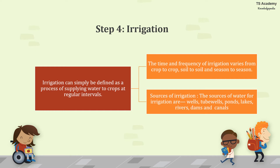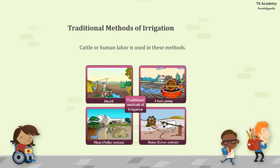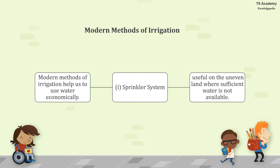Step 4 is irrigation, which can simply be defined as the process of supplying water to crops at regular intervals. The time and frequency of irrigation varies from crop to crop, soil to soil, and season to season. Sources of irrigation include wells, tube wells, ponds, lakes, rivers, dams, and canals. Traditional methods used cattle and human labor to bring water to the field, such as dhekli, chain pump, moat (a pulley system), and rahat (a lever system).